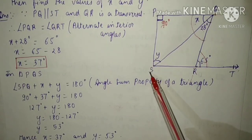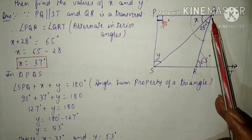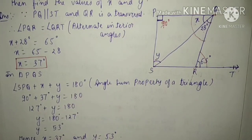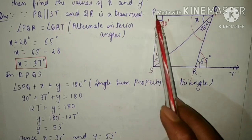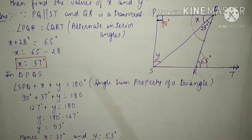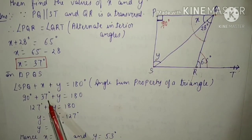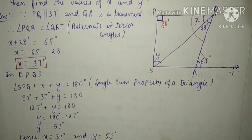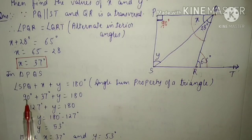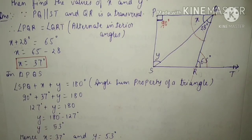Angle SPQ plus X plus Y equals 180 degrees. Angle SPQ is also equal to 90 degrees. So 90 degrees plus 37 degrees plus Y equals 180 degrees. This is because the sum of all angles of a triangle equals 180 degrees. Now 90 plus 37 equals 127 degrees, so 127 plus Y equals 180 degrees.